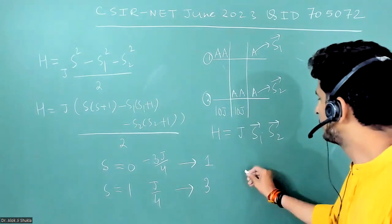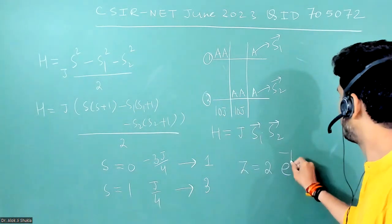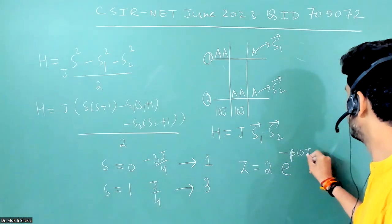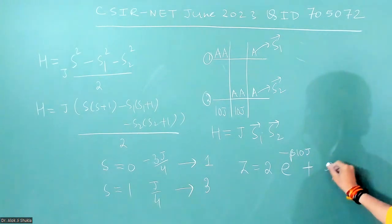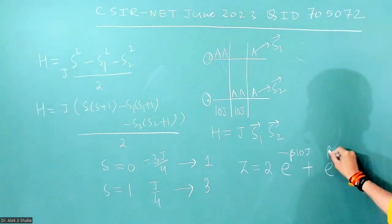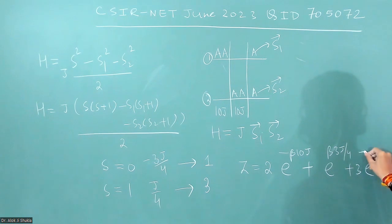So two microstates are here. So write the partition function: two times E to the power minus beta into 10 J, plus one time E to the power beta 3 J by four, plus three times E to the power minus beta J by four. So this is the partition function.